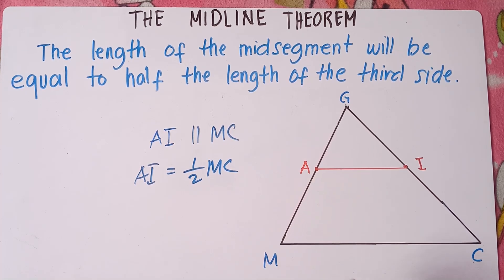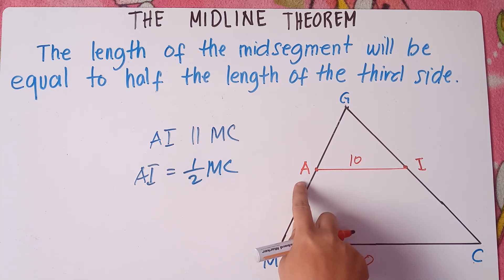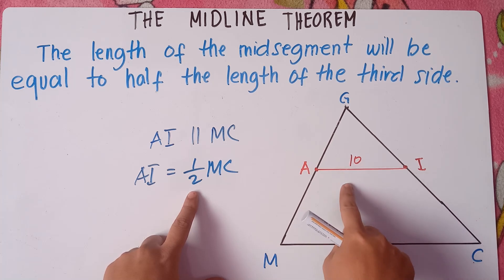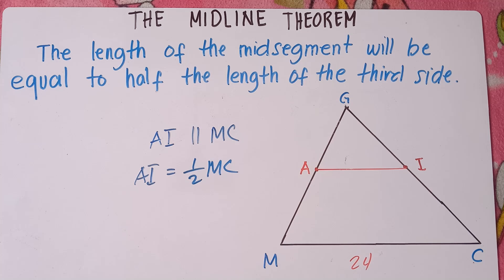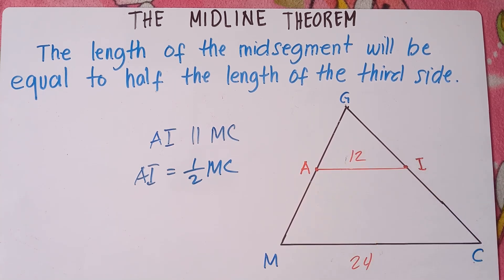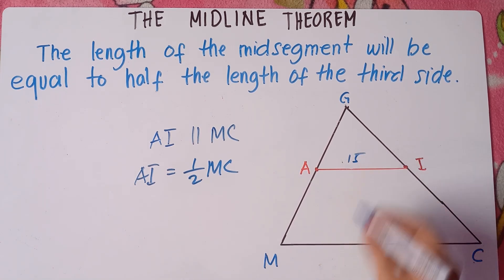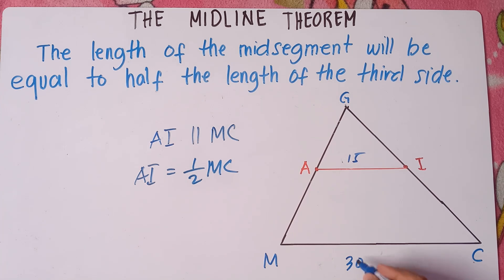So if AI is 10, then MC will be 20, because AI is one half of MC. If MC is 24, then AI will be 12. And if AI is 15, you just multiply by 2, so MC equals 30.